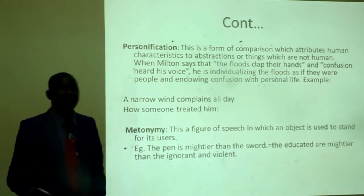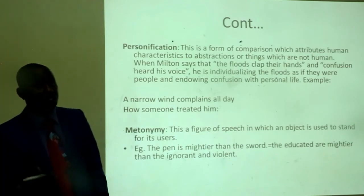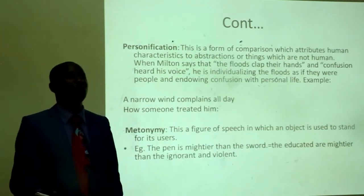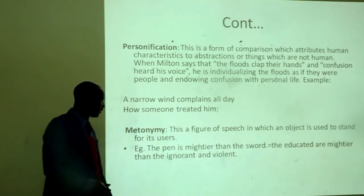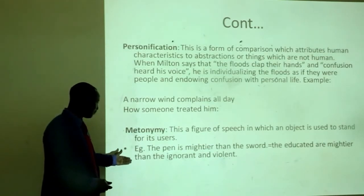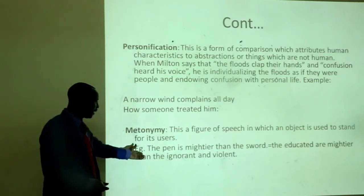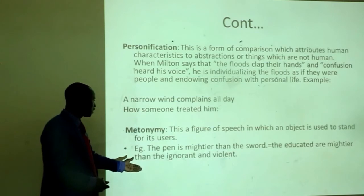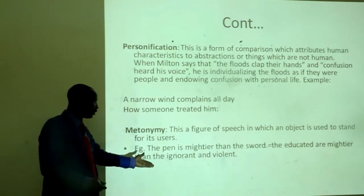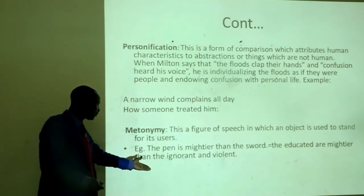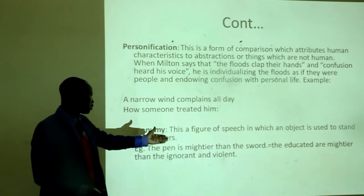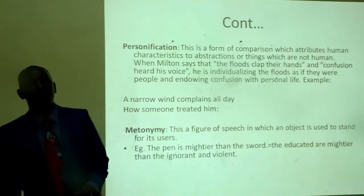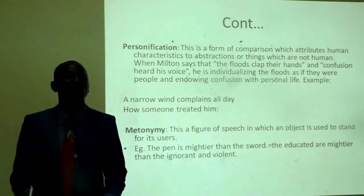What is metonymy? Metonymy is a figure of speech in which an object is used to stand for its associated use or concept. For example: 'The pen is mightier than the sword.' The pen can stand for educated people, and the sword can stand for the uneducated, ignorant and violent people. So the pen stands for the educated, and the sword stands for the ignorant and violent — hence, a figure of speech in which an object is used to stand for its uses.